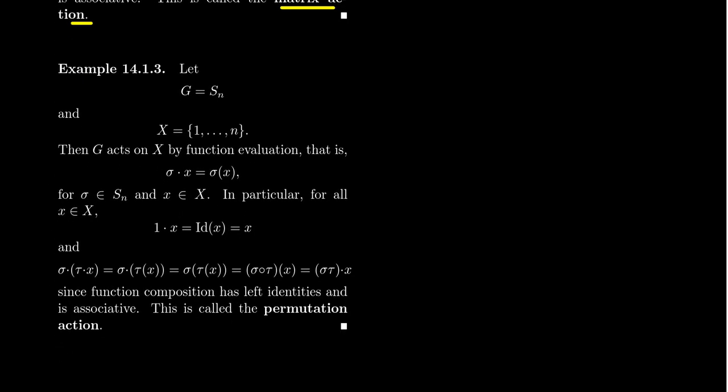Another example, very similar to the one we just saw, is permutations. Take G to be the symmetric group S_n on n letters, and take the set we're going to act upon to be those n letters: {1, 2, 3, ..., n}. How does a permutation act upon the set X? If sigma is some permutation in S_n and x is some element in the set X, then sigma dot x is defined to be the image of x via the permutation sigma.